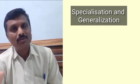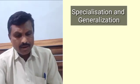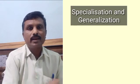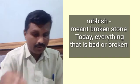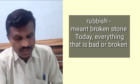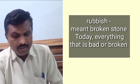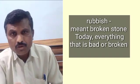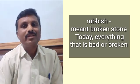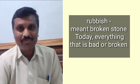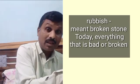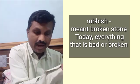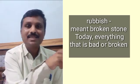For example, the word 'rubbish' in Old English only meant broken stones, but now we use it for everything that is bad or broken — so its special meaning has become generalized. Similarly, 'camp' was originally used to refer to a military camp but is now used for all kinds of camps. This is called Generalization.